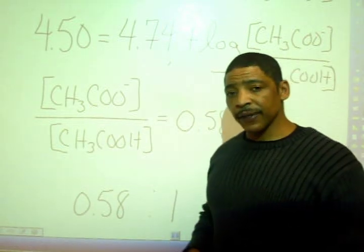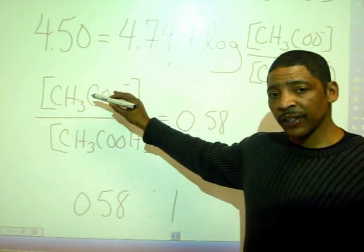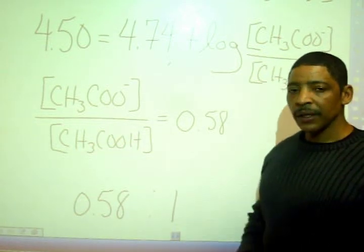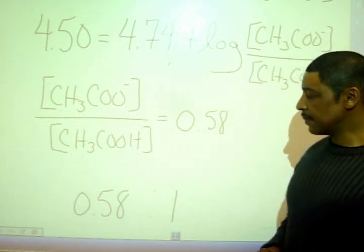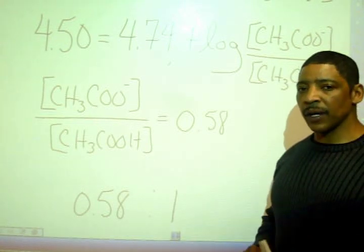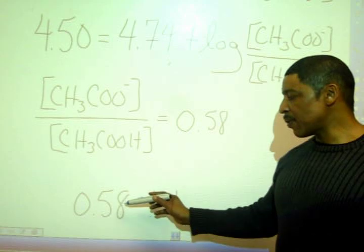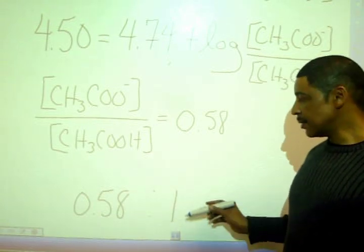That will give us concentration of anion divided by concentration of acid is equal to 0.58. This will give us a ratio of anion to acid that is 0.58 to 1.